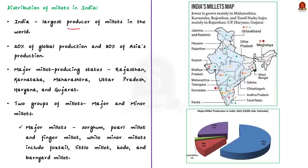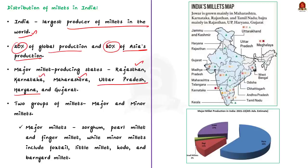India is the largest producer of millets in the world. India accounts for 20% of global production and 80% of Asia's production. The major millet-producing states in India are Rajasthan, Karnataka, Maharashtra, Uttar Pradesh, Haryana and Gujarat. These six states account for more than 83% of the total millet production in India.